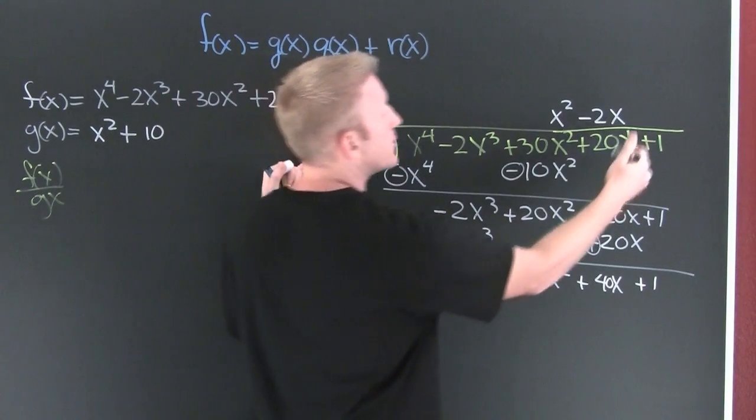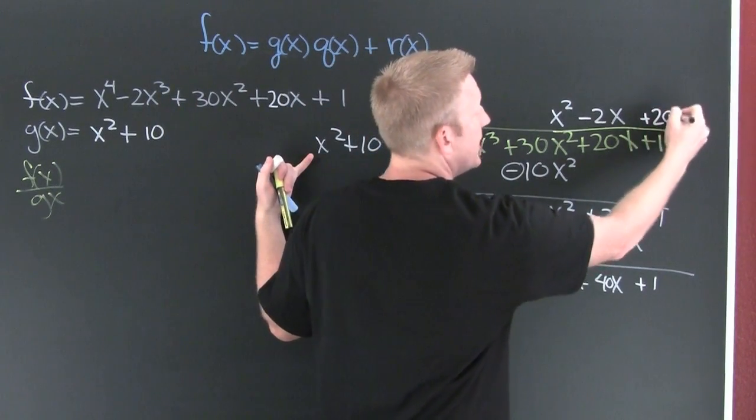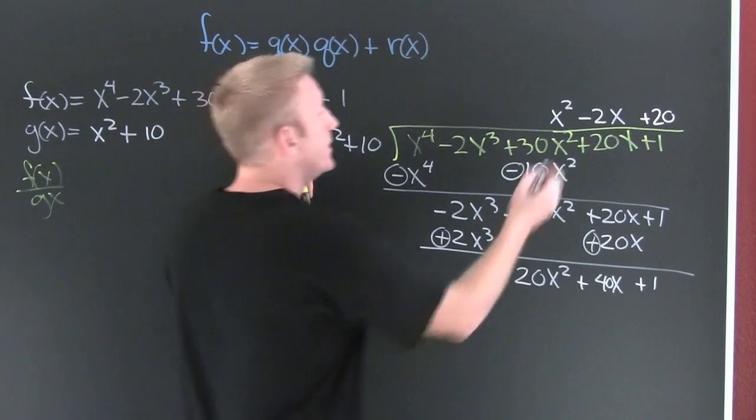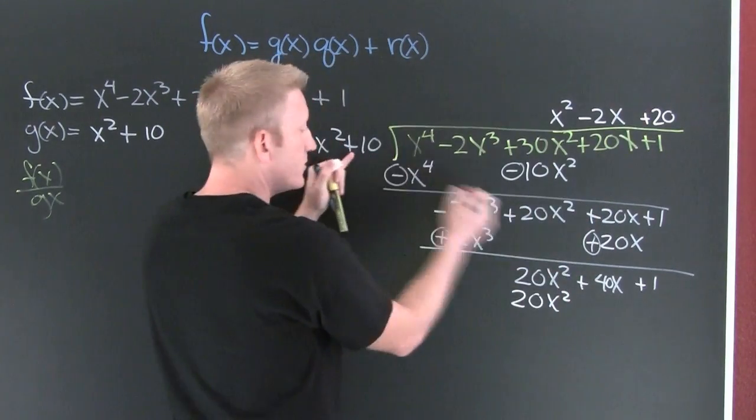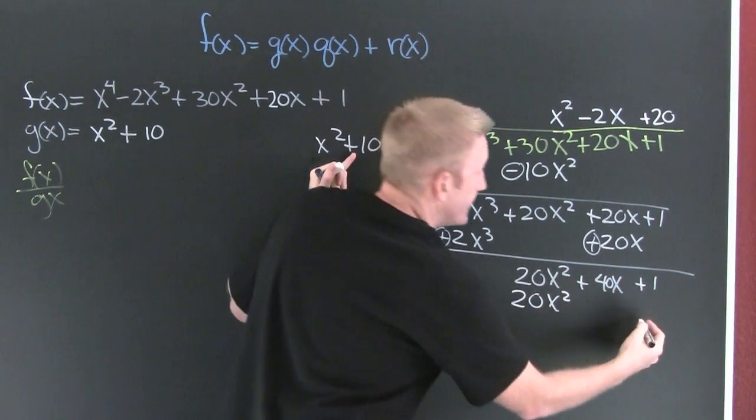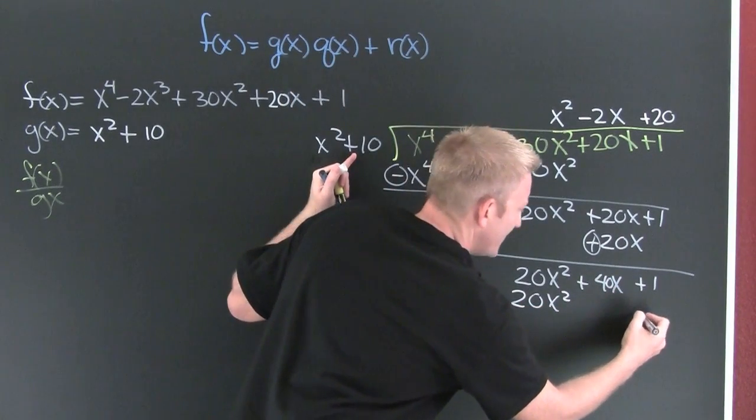Yes, plus 20. And then put that in my constant category. Then I take this one times that one and put it there: 20x squared. This one times that one put it where? Right here. Oh wait, really? 200. Can you tell I just made up the numbers?